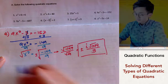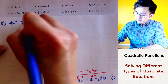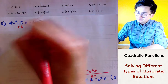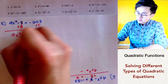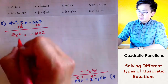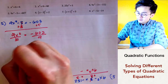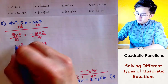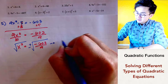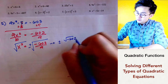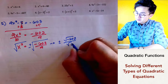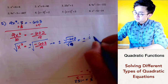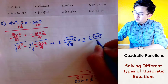For problem number five, we have 9x squared minus 5 equals negative 607. We add 5 on both sides, leaving us with 9x squared equal to negative 602. Dividing both sides by 9 gives us x squared equals negative 602 over 9. Taking the square root of both sides, we get an imaginary numerator and a perfect square denominator, so our final answer is plus or minus i times the square root of 602 over 3.